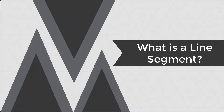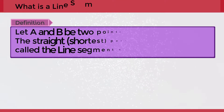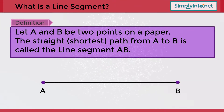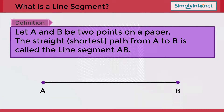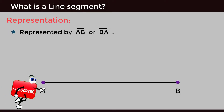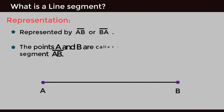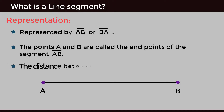What is a line segment? Definition: Let A and B be two points on a paper. The straight shortest path from A to B is called the line segment AB, represented by AB bar or BA bar. The points A and B are called the endpoints of the segment AB bar.